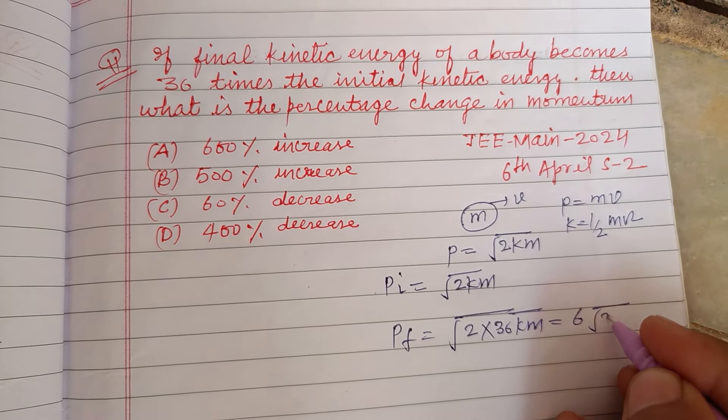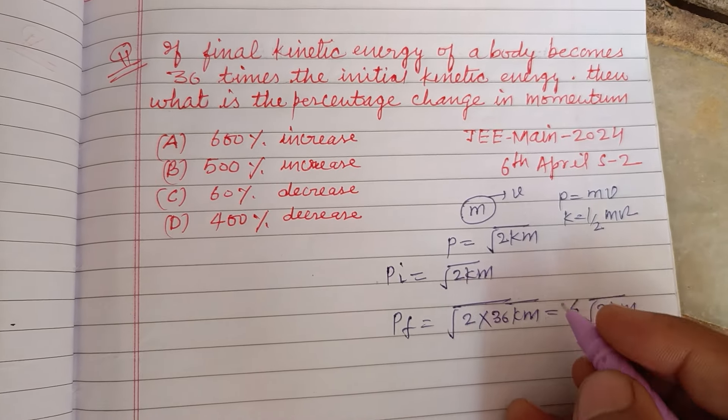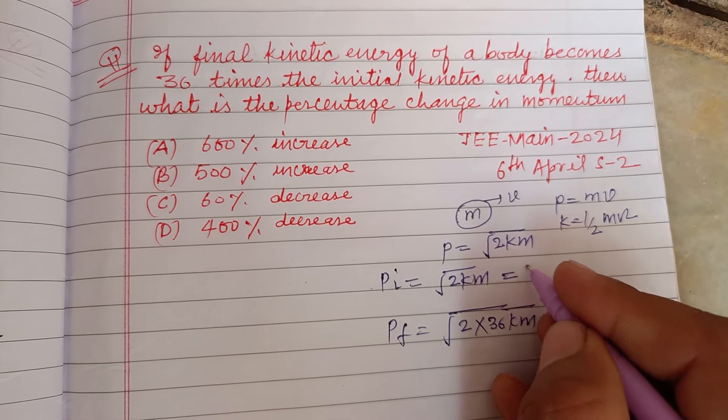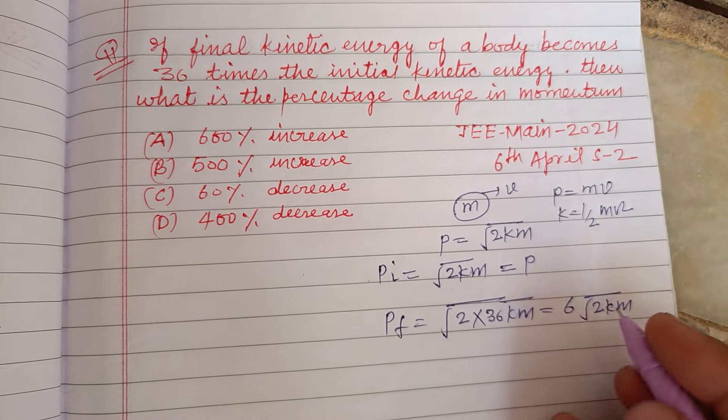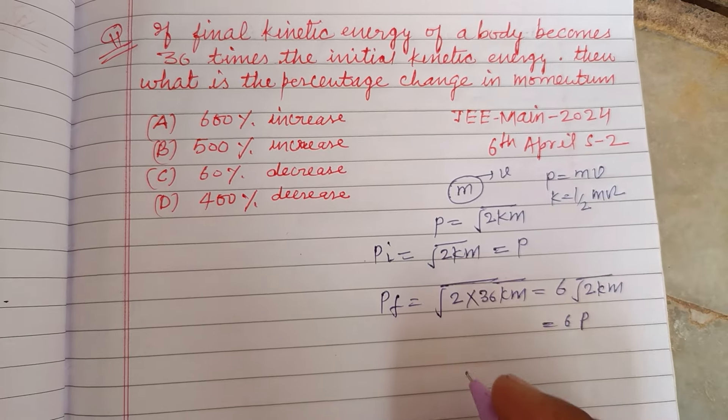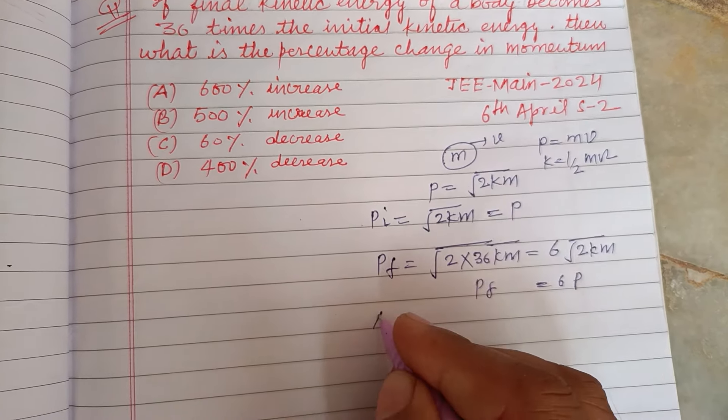So this is 6 times square root of 2km. Let it be P, so P final is 6P. Change in P